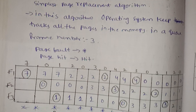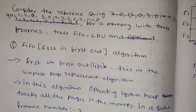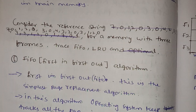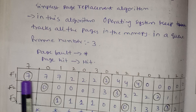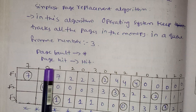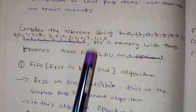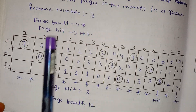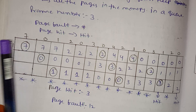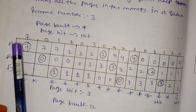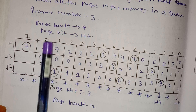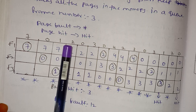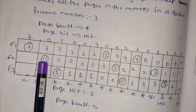Here we have a page fault, marked with a star. We have page faults for 3 frames. First, frame 1 enters 7. Then 0 enters, then 1 enters, so we have 7, 0, 1 in our frames.